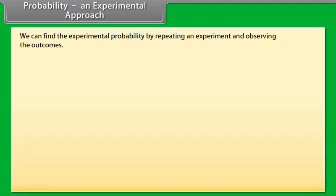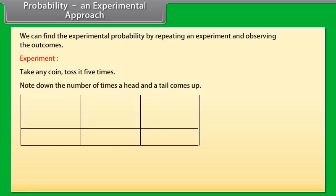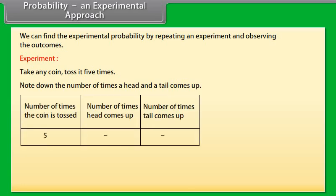Probability - an experimental approach. We can find the experimental probability by repeating an experiment and observing the outcomes. Let's do an experiment. Take any coin, toss it 5 times. Note down the number of times a head and a tail come up and fill the given table. Then write the fractions.